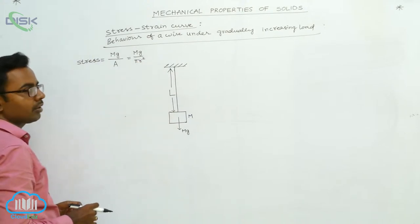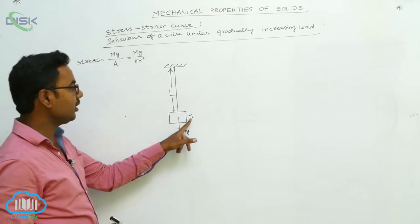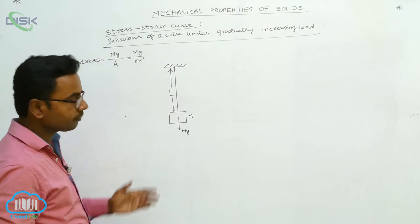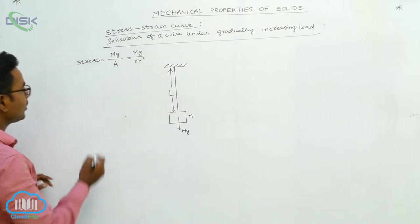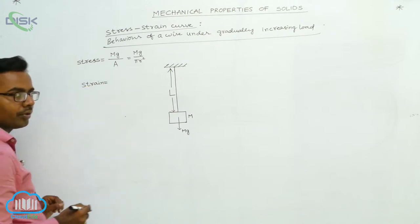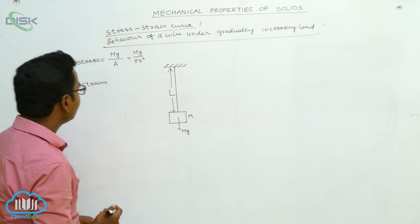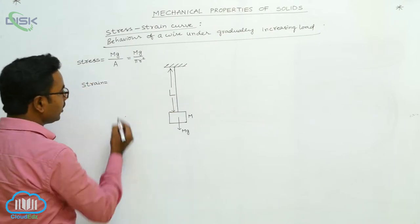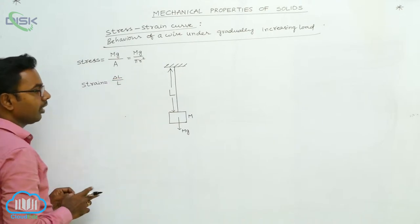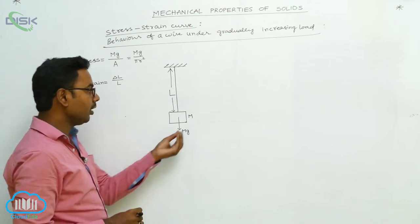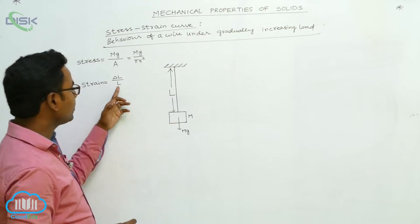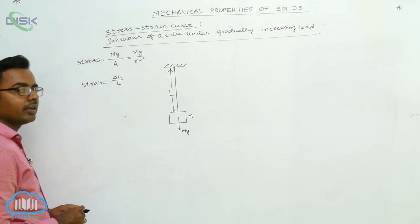Here m is the mass of the block or load attached, and r is the radius of the wire. In this way we find the stress. For strain, tensile strain is produced here. Strain equals change in length divided by original length — that is, increase in length ΔL divided by original length L. For each value of mass m, we measure how much elongation ΔL is produced, then divide by L to calculate the strain.